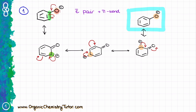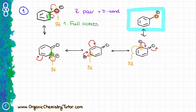The next thing in my analysis is going to be to find the major versus minor resonance contributors. Whenever we are looking for major versus minor contributors, we are first going to check for full octets. When I'm talking about full octets, I'm specifically referring to the atoms with the charge — in this case with the negative charge. So my oxygen in the first structure has a full octet, my carbon in the next one also has a full octet, my next carbon has a full octet, and my last carbon down there also has a full octet. So all of my atoms that have charge have a full octet.